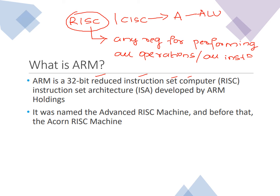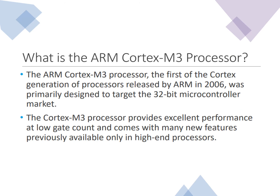ARM stands for Advanced RISC Machine. As mentioned earlier, it was also known as the Acorn RISC Machine. The ARM Cortex-M3 processor is the first of the Cortex generation of processors, first released by ARM in 2006. It was primarily designed to target the 32-bit microcontroller market. What we are studying — the Cortex-M3 — is a 32-bit processor, not a controller.